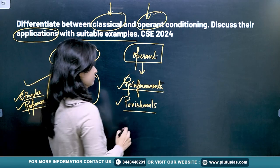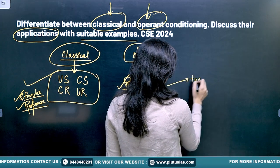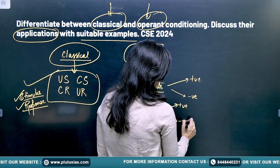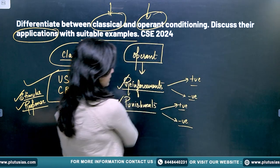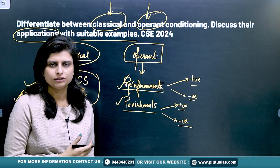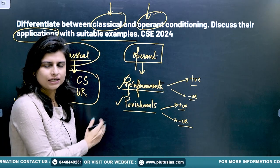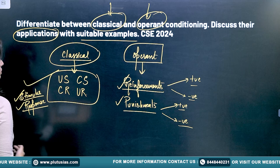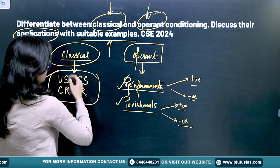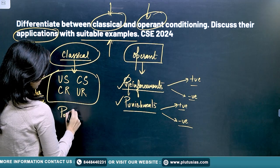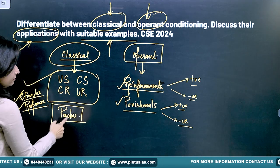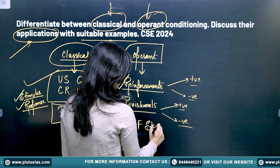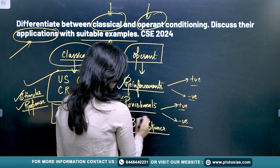In operant conditioning, there is positive reinforcement, negative reinforcement, positive punishment, and negative punishment. You have to explain all of these. The definitions and how they vary from one conditioning to the other are given in the book. This question is important because it asks about applications with suitable examples. Classical conditioning was done by Pavlov, and operant conditioning we have B.F. Skinner.